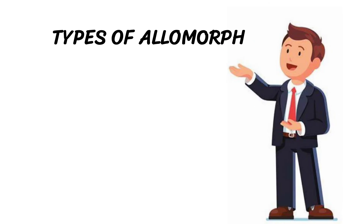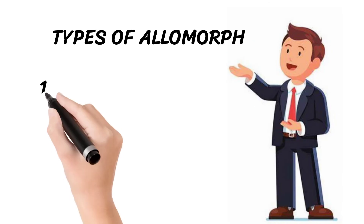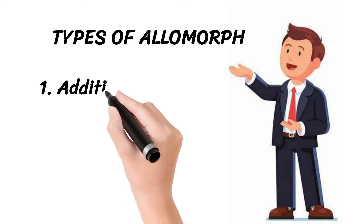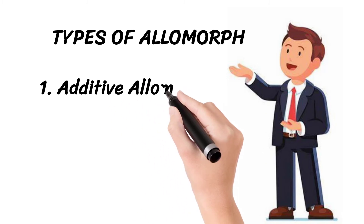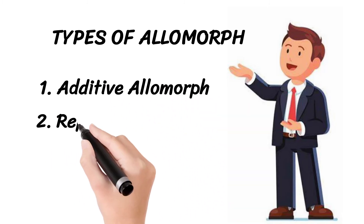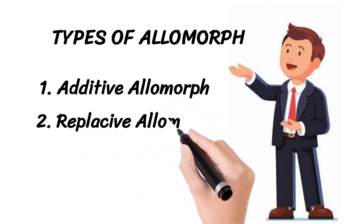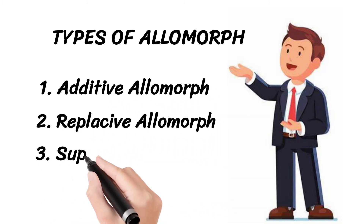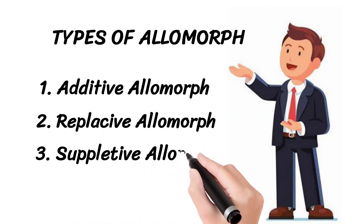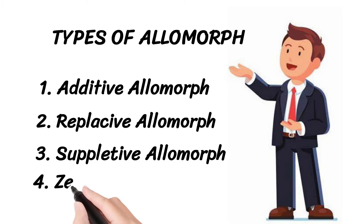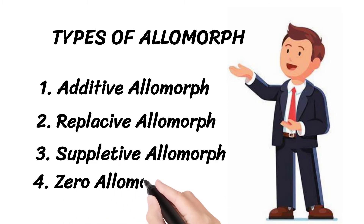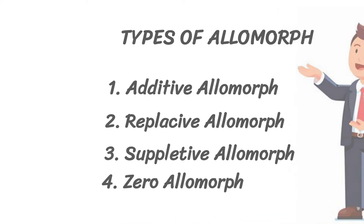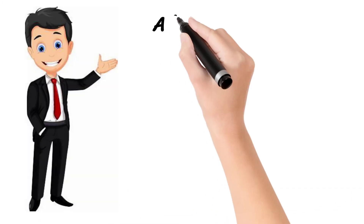This video is about the types of allomorphs, in which we discuss all four types: additive allomorph, replacive allomorph, suppletive allomorph, and zero allomorph.